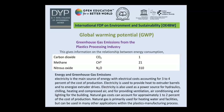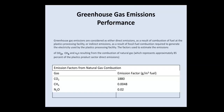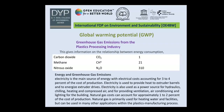Regarding global warming potential, I will discuss greenhouse gas emissions from the plastic processing industry and the relationship between energy consumption and greenhouse gas emissions. The global warming potential values are: CO2 — 1 gram per meter cube; methane (CH4) — 21 grams per meter cube; nitrous oxide (N2O) — 310 grams per meter cube.